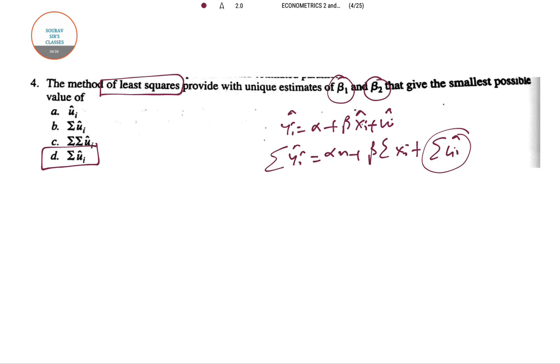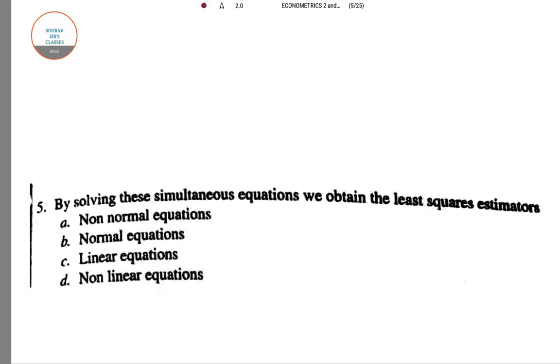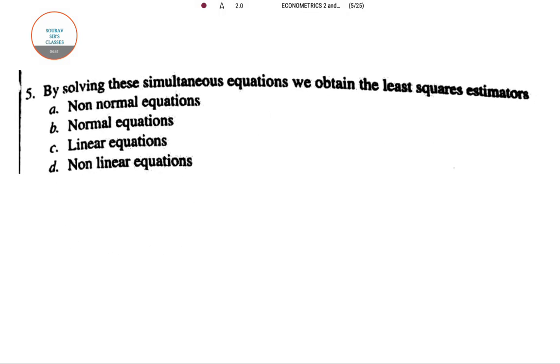Next question is question number 5. In the fifth question it is saying by solving these simultaneous equations we obtain the least square estimators.